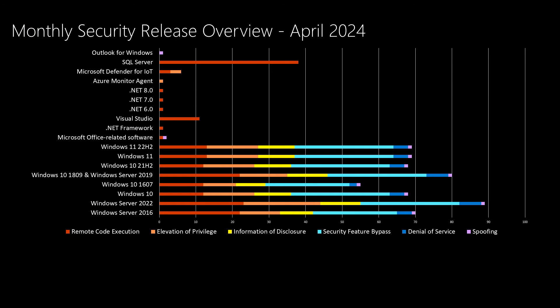Looking at the overview chart, we put all of the products on a single chart for this release. We typically put the Windows products towards the bottom of the slide to make it easier to look at. What is different this month is the number of vulnerabilities affecting Windows. We've been averaging 30 to 40 vulnerabilities — high thirties to mid-40s depending on the specific Windows product — and we're almost at 90 on Windows Server 2022.